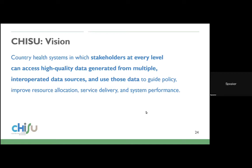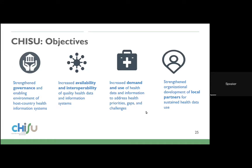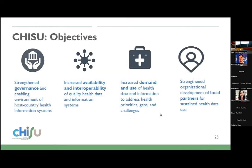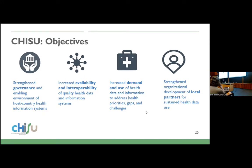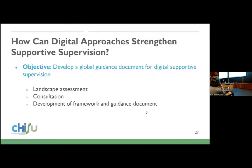TISSU is a project that focuses on national systems — country-level systems. We try to support countries so that actionable data is available. We have four objectives within this framework, especially around strengthening governance and ensuring an enabling environment for health information systems in high-burden countries, and increasing the availability and quality of health data as well as information systems.